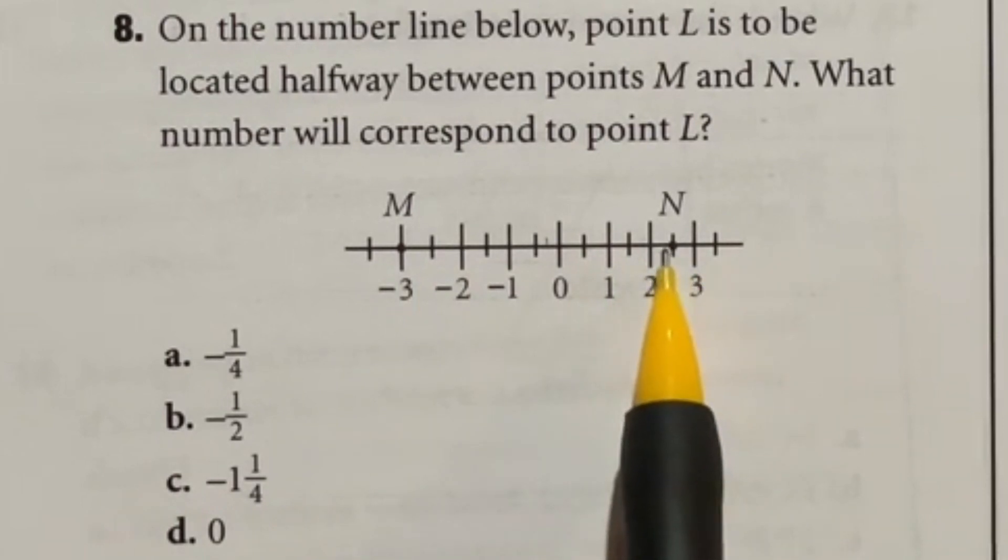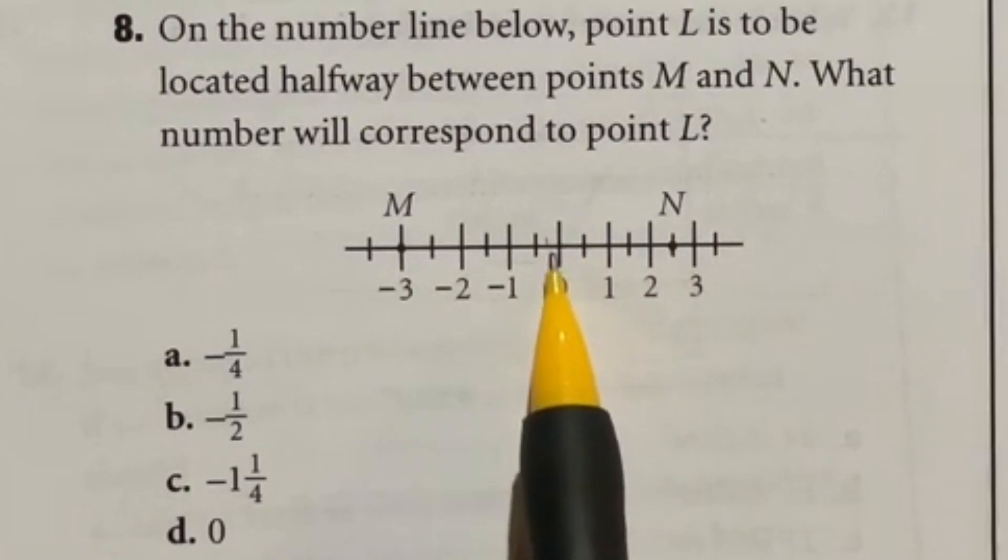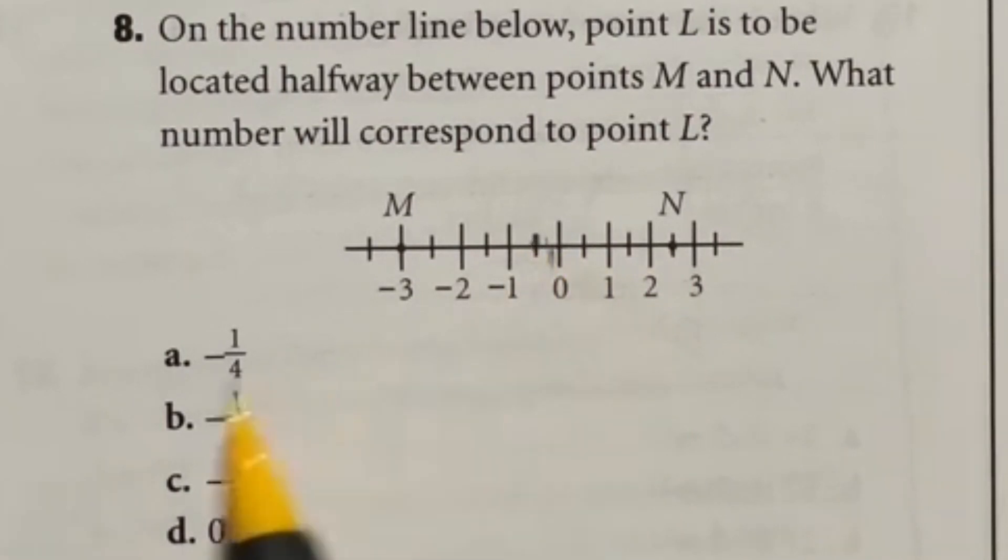So I'm just going to count over five and a half jumps. One, two, three, four, five, and I'd go halfway to this next one. Well, this right here is negative one half, so halfway to that would be negative one-fourth because that splits a half in half. So our answer here is A.